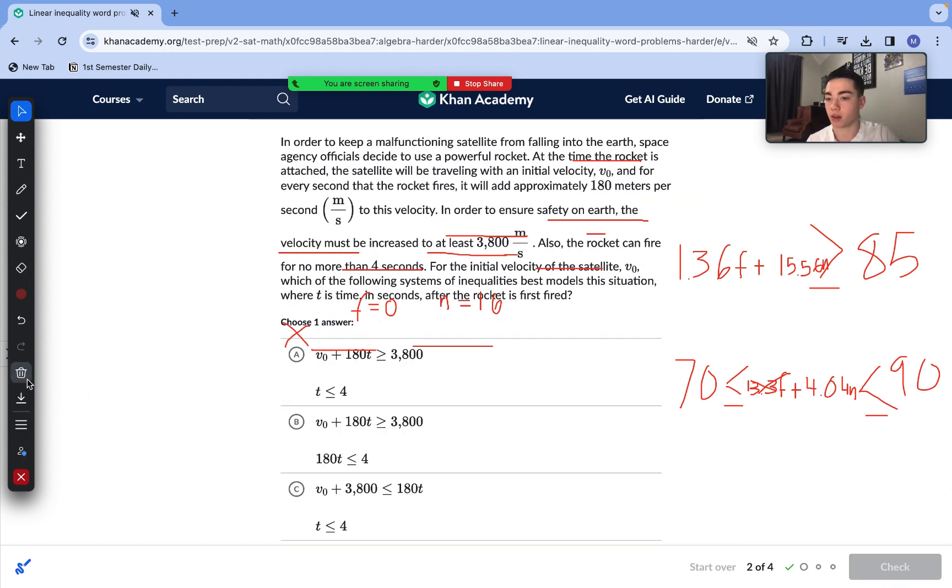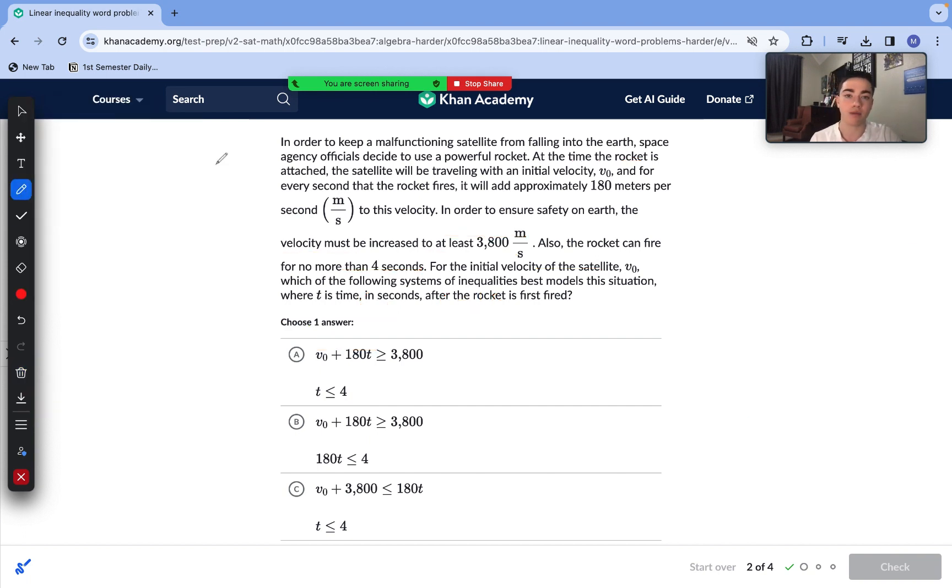On to our next problem. In order to keep a malfunctioning satellite from falling into the earth, space agency officials decide to use a powerful rocket. At the time the rocket is attached the satellite will be traveling with an initial velocity and for every second that the rocket fires it will add approximately 180 meters per second to this velocity. In order to ensure safety on earth the velocity must be increased to at least 3800 meters per second. Also the rocket can fire for no more than four seconds. Which of the following systems of inequalities best models the situation where T is time in seconds after the rocket is fired? So there's a lot of words here but we can easily decipher it.